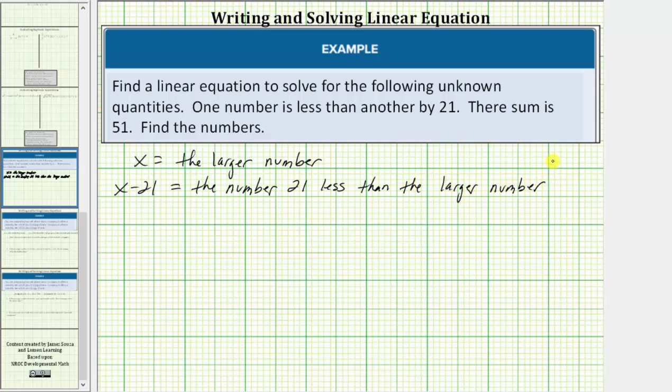From here, because we know the sum is fifty-one, we can write an equation to solve for the unknown quantities. Because the sum is equal to fifty-one, we know that x plus the quantity x minus twenty-one must equal fifty-one.